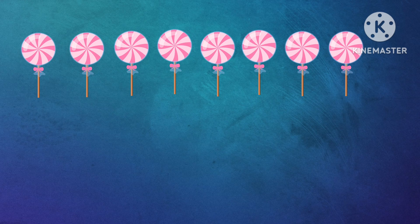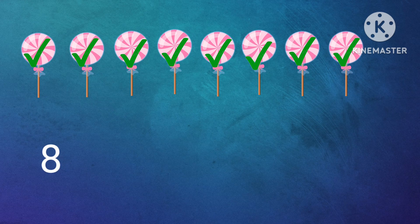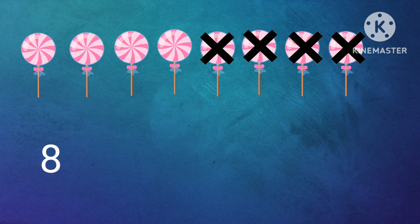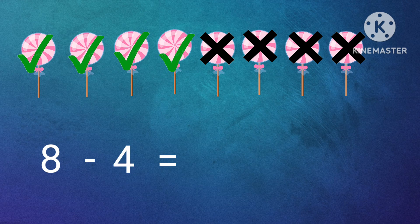How many candies we have? Shall we count? 1, 2, 3, 4, 5, 6, 7, 8. There are 8 candies. In 8 candies we have taken 4 candies. So how many we have now? Shall we count? 1, 2, 3, 4. 8 minus 4 equal to 4 candies.